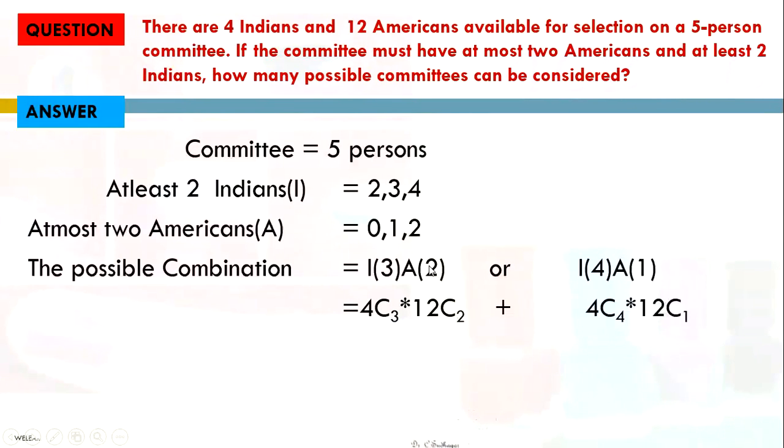If you need clarification on combinations, watch my video on Basic Combinations. Now, this is one choice: ₄C₃ Indians and ₁₂C₂ Americans. The addition principle says either one choice or the other will happen, so we add them. For the second choice: ₄C₄ Indians and ₁₂C₁ Americans.